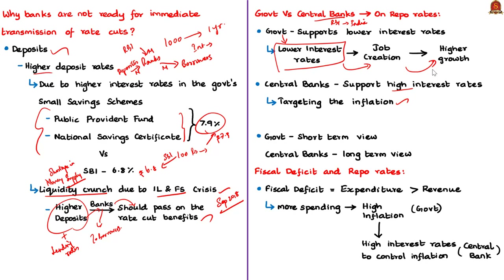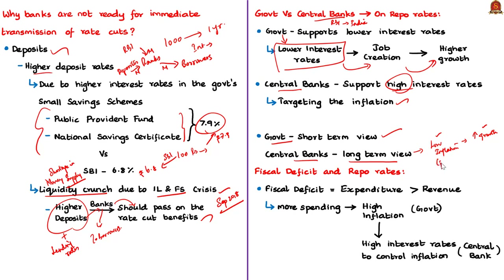Governments typically have a short-term view, prioritizing political interests, while central banks take a long-term perspective — believing that low inflation will eventually lead to higher growth. An Indian example is cited: during UPA-2, the Finance Minister pushed for rate cuts, but RBI Governor Duvuri Subbarao insisted on higher rates to control money supply and inflation, stating that low inflation is a prerequisite for sustained high growth.